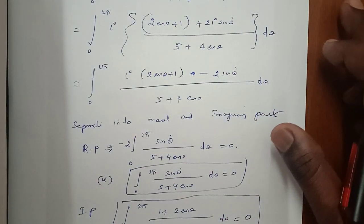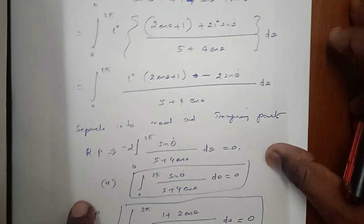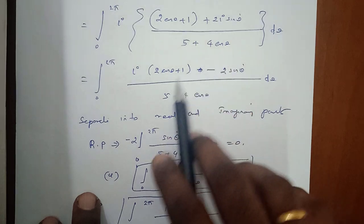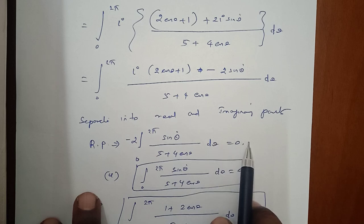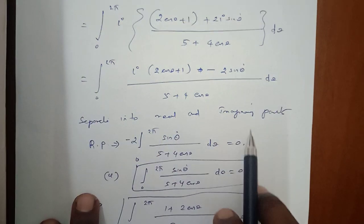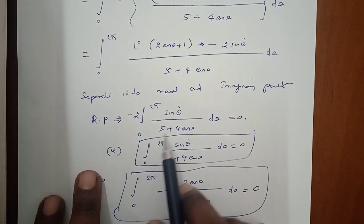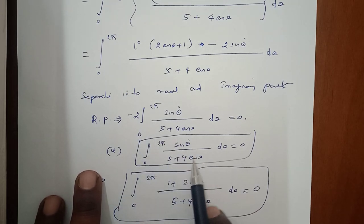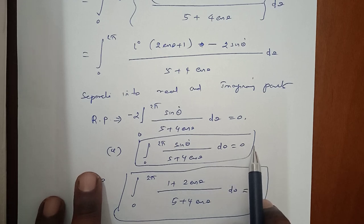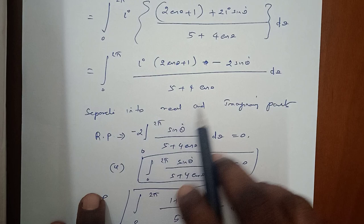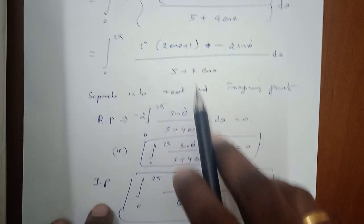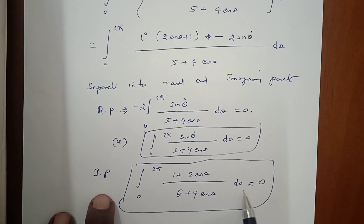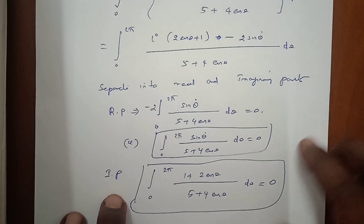Separating into real and imaginary parts, the real part is −2sinθ/(5 + 4cosθ), which equals 0. Therefore the integral from 0 to 2π of sinθ/(5 + 4cosθ) dθ = 0. Similarly, selecting the imaginary part, the integral from 0 to 2π of (1 + 2cosθ)/(5 + 4cosθ) dθ = 0. Hence the problem is solved. This is a very important problem.